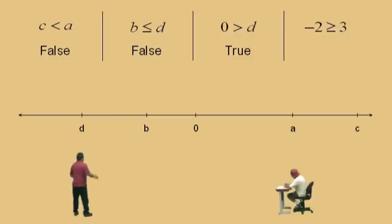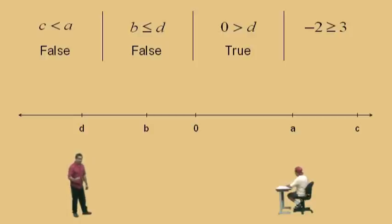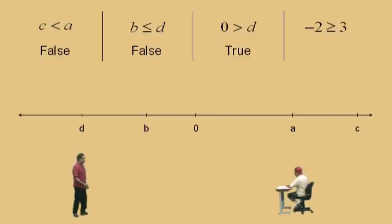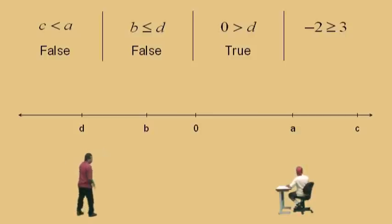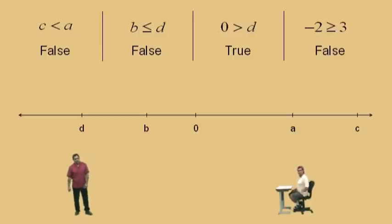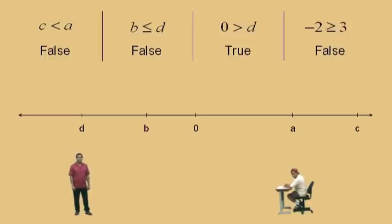Let's do this one: negative 2 greater than or equal to 3. You don't even need a number line for this. This statement is asking: is a negative number greater than a positive number, or is it equal to a positive number? No, that can't be true. Negative numbers are to the left of 0; positive numbers are to the right of 0. So Charlie, is negative 2 greater than or equal to 3? No, it's not — the answer is false. That's an introduction to inequalities. Anyway, time to take a break, and we'll come back and do some more pre-algebra. I'll see you again soon.